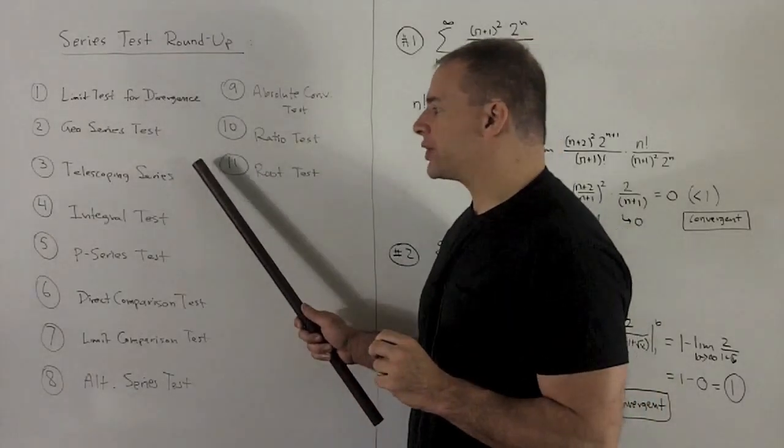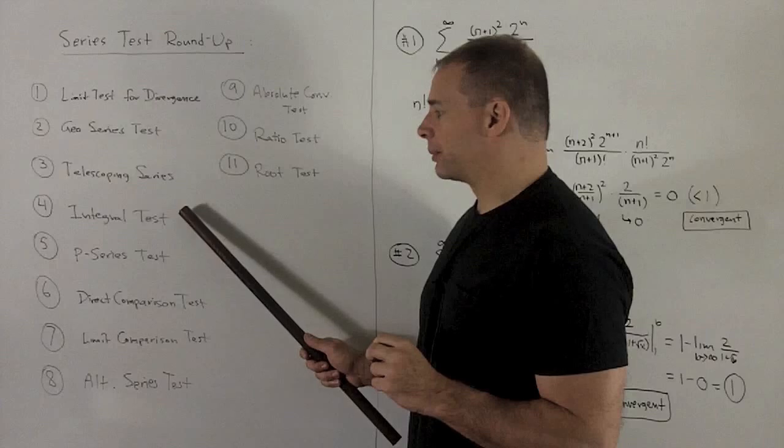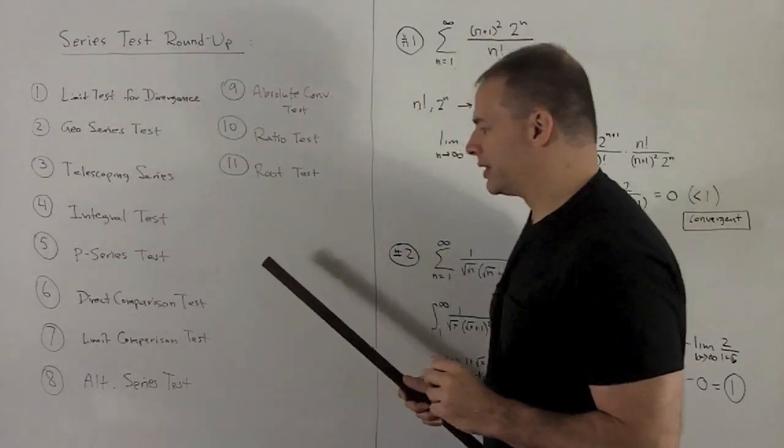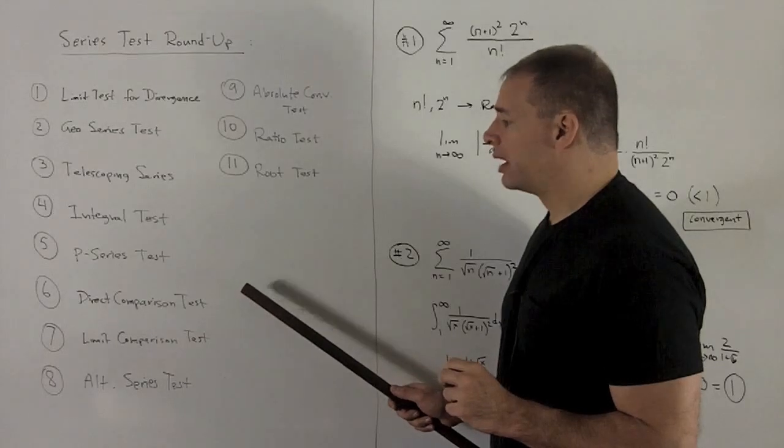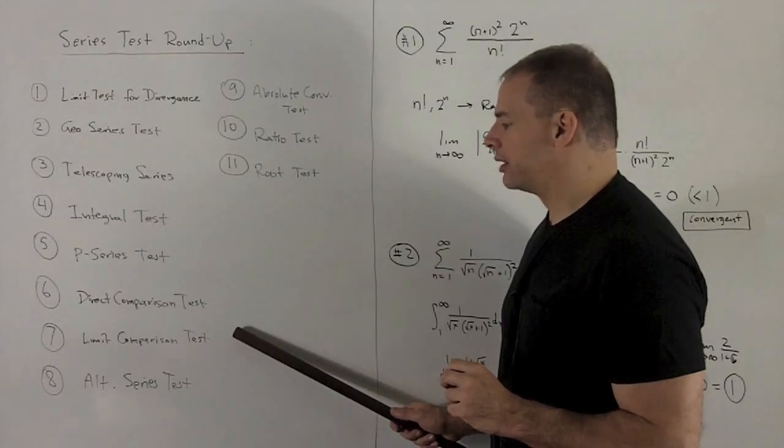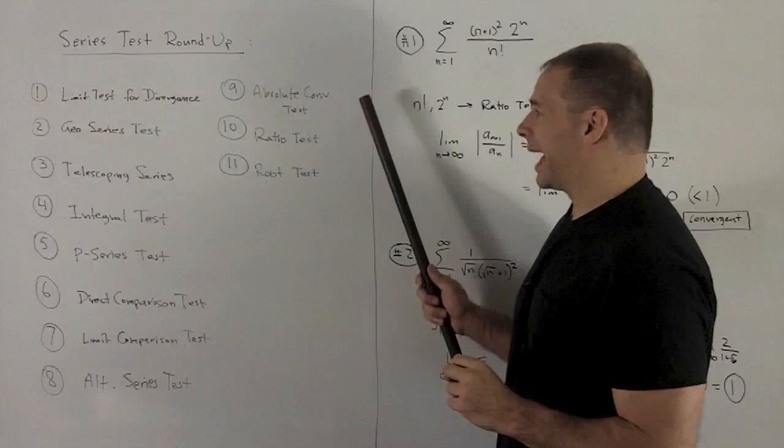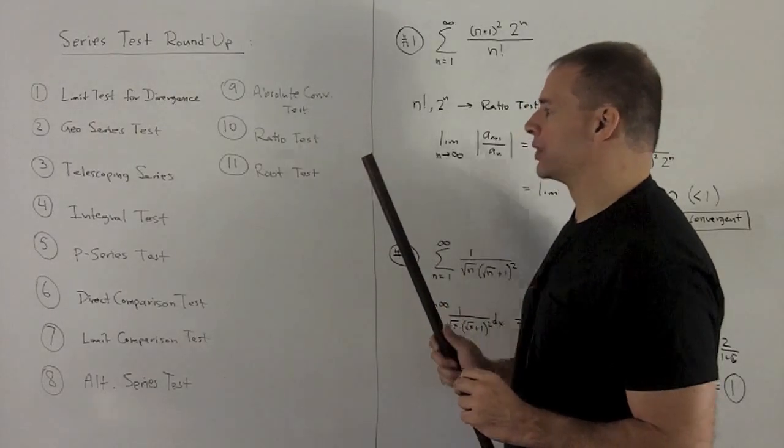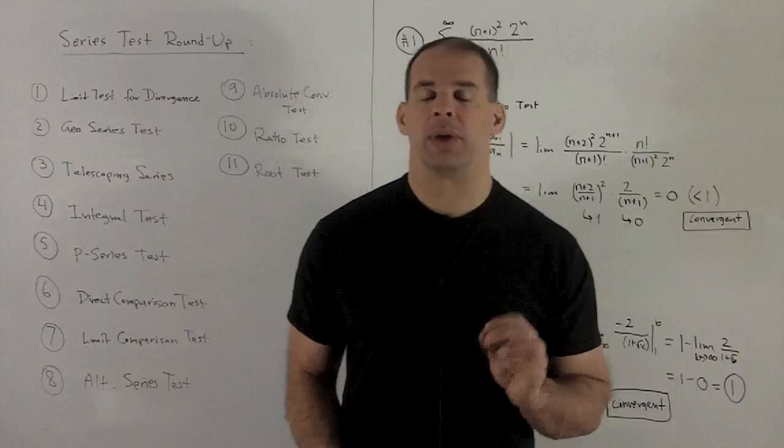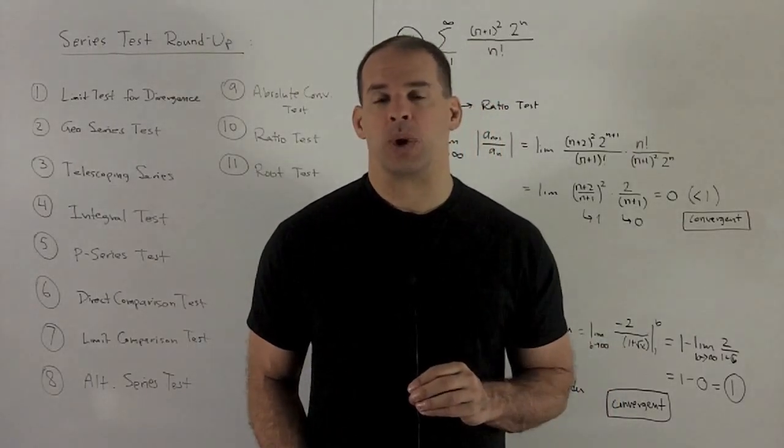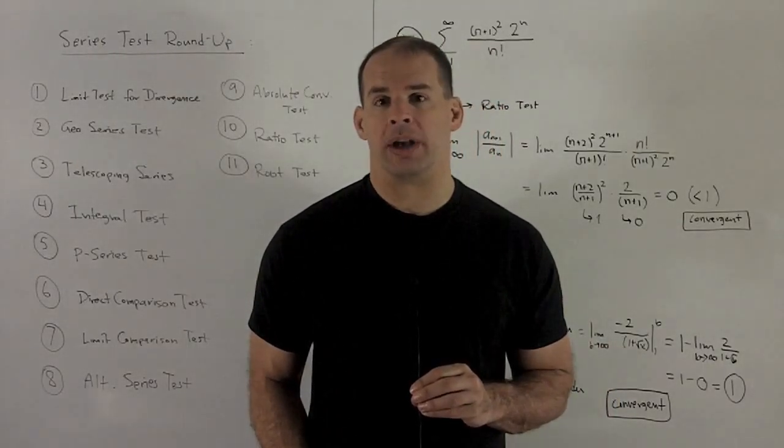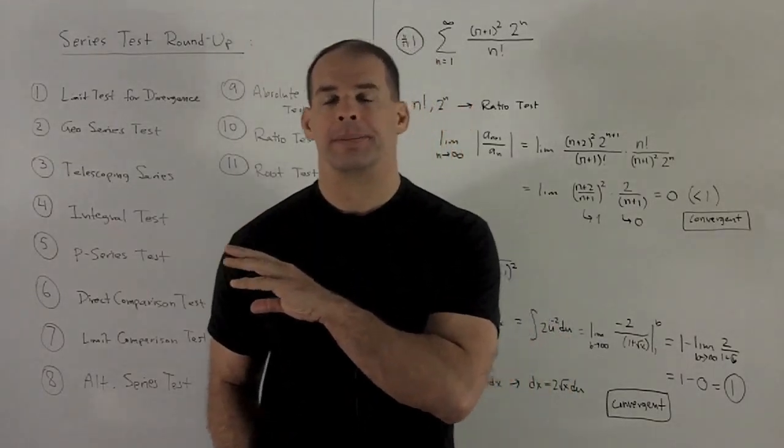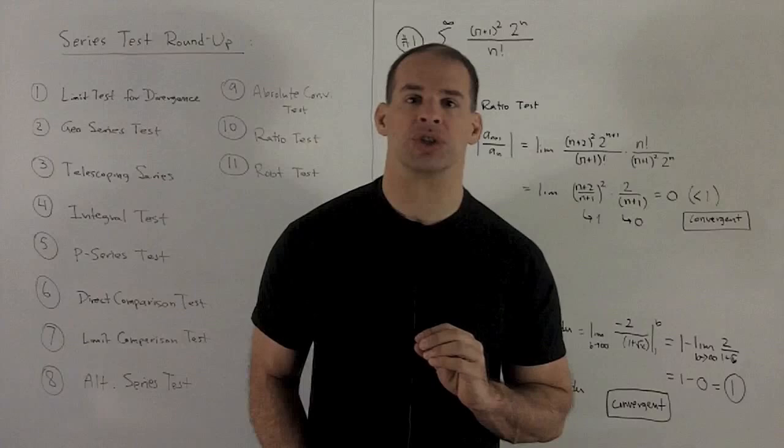We had telescoping series, the integral test. From the integral test follows the p-series test. We have a direct comparison test, the limit comparison test, the alternating series test, absolute convergence test, the ratio test, and the root test. So what we'll do is, I'm just going to throw out about 12 series and we're going to go through each one and see how they match up to things on my list here. And then we'll decide whether this series is convergent or divergent.